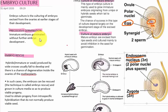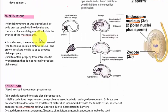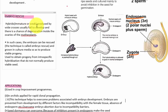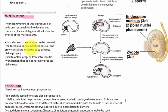Next comes embryo rescue. Sometimes hybrids or weak embryos produced by wide crosses usually fail to develop, and there is a chance of degeneration inside the ovaries of the mother plant. In such cases, the embryos can be rescued — the technique is called embryo rescue — and they are grown in culture media so as to produce viable progeny. It is used to obtain progeny from interspecific hybridization that does not normally produce viable seed.